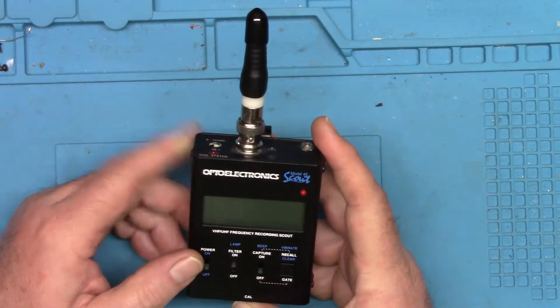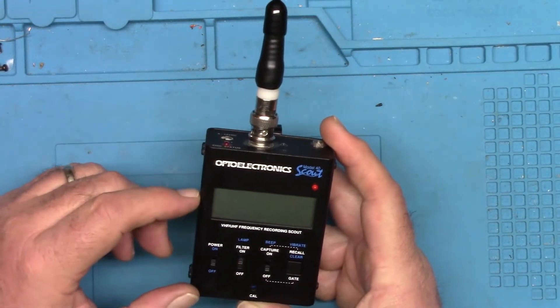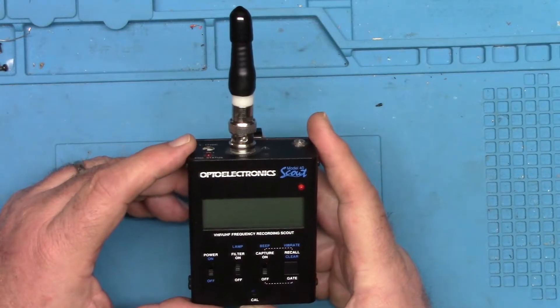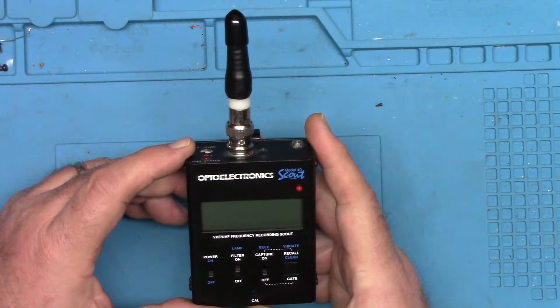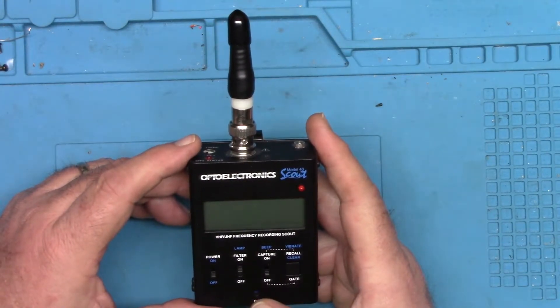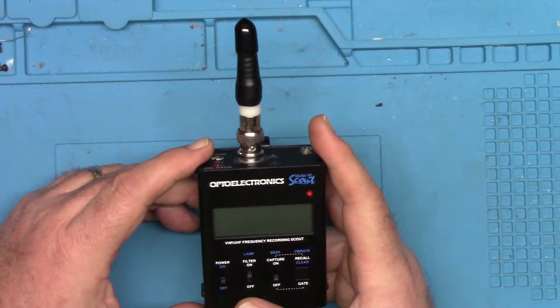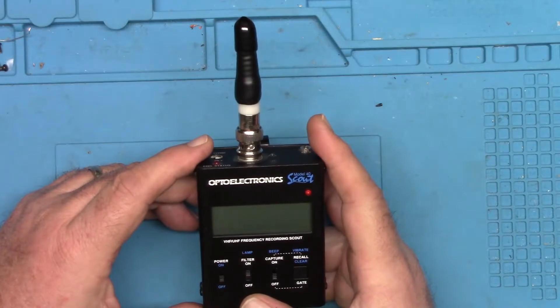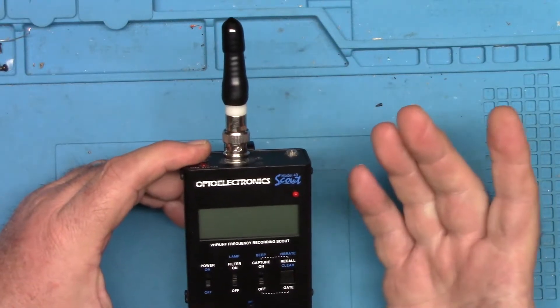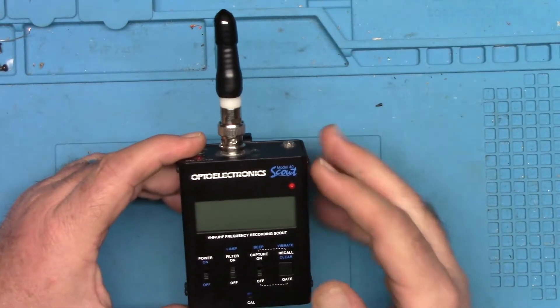So I bought this, and what this allows you to do—it still works fine, I had to replace the battery pack—is you can turn this on and as you walk or drive or just set it close to a radio, it will catch the frequencies that are transmitted. So it looks for a frequency spike above background level noise.